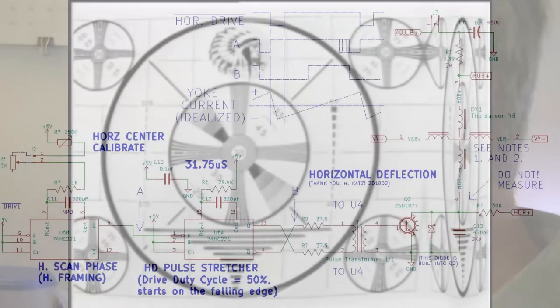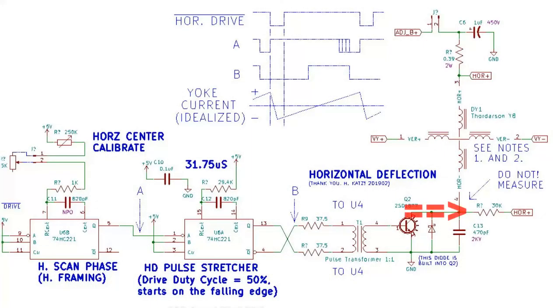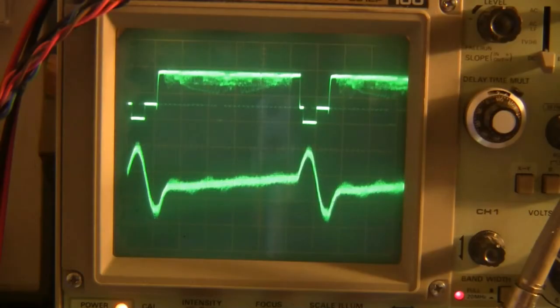I fixed that by adding the 30k resistor shown next to the resonating capacitor. It is connected symbolically to both ends of the deflection yoke. Here we see that it's connected to pin four of the deflection yoke. The other end, horizontal plus, is connected to pin three of the deflection yoke. Let's look at those waveforms now.